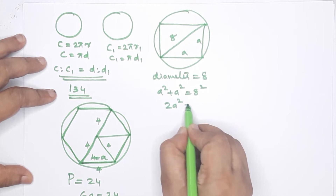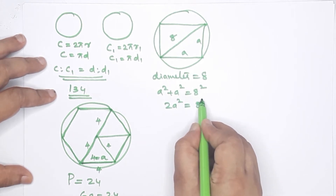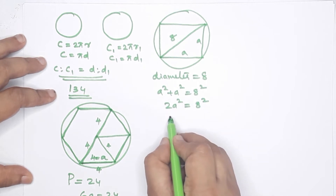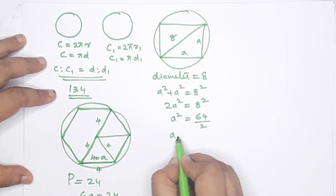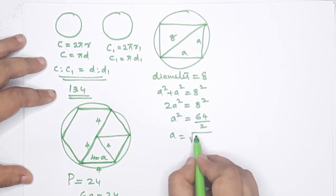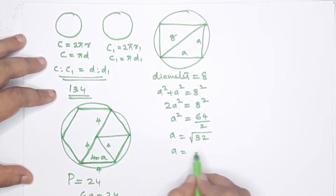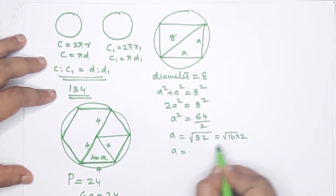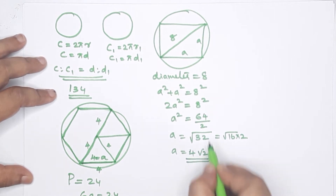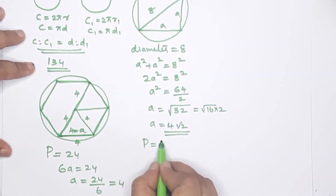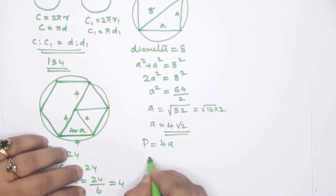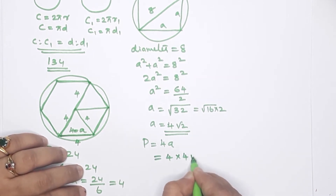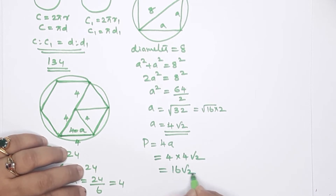So 2A² equals 64, meaning A² equals 32. Then A equals √32 equals √(16×2) equals 4√2. This is one side of the square. The perimeter of the square is 4A, so perimeter equals 4 times 4√2, which equals 16√2.